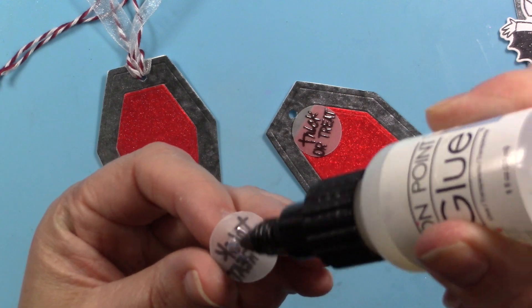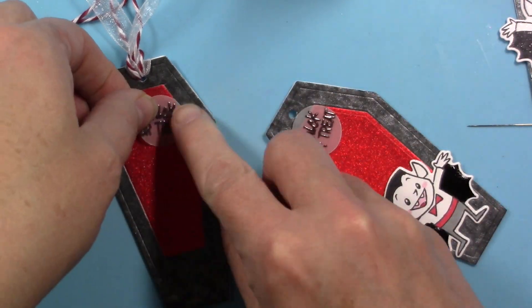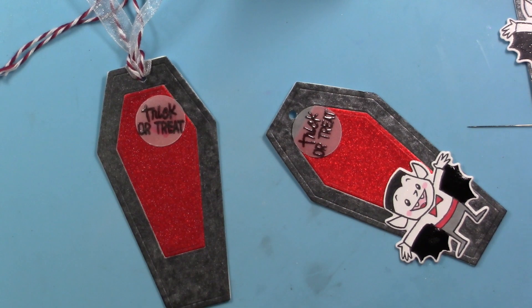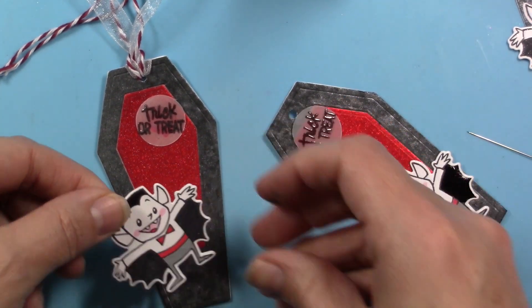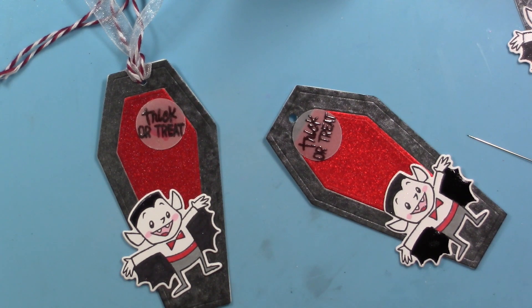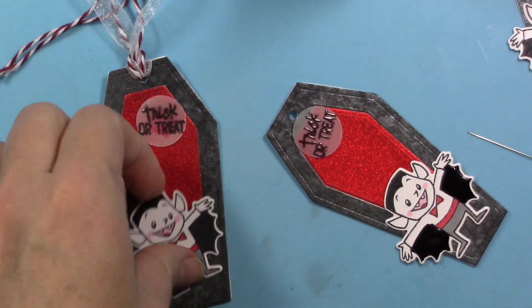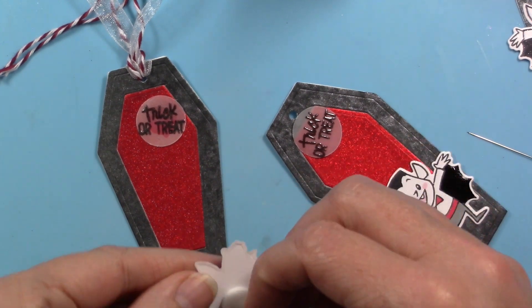I'm going to take my On Point glue and put that on the back of the vellum. I will tell you vellum curls, so you don't see me do this in the video, but you do want to place an acrylic block over that or put some weight on that vellum tag or that vellum circle because it will curl up on you. But if you add weight with the On Point glue, it won't.